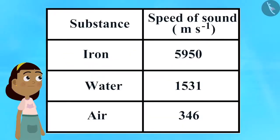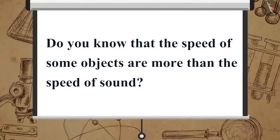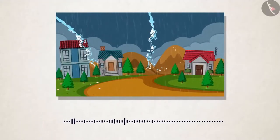Have a look at this table which shows the speed of sound in different mediums at 25 degrees centigrade. Do you know that the speed of some objects is more than the speed of sound? An object with speed more than that of sound is said to travel at supersonic speed.